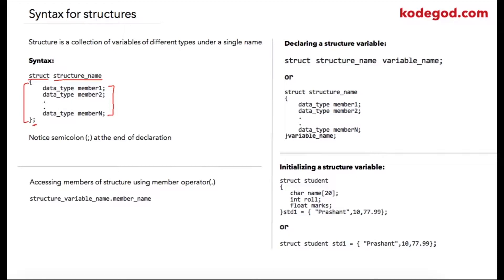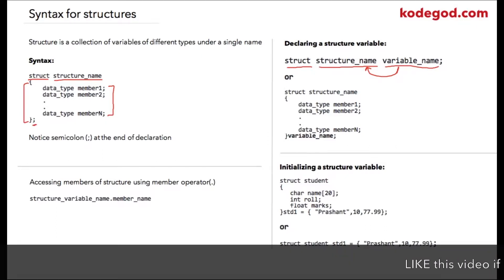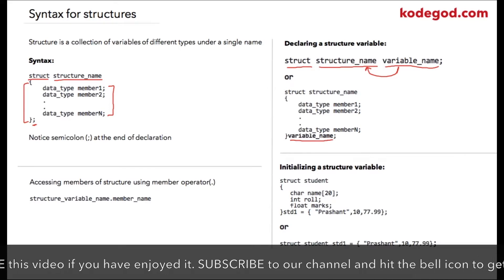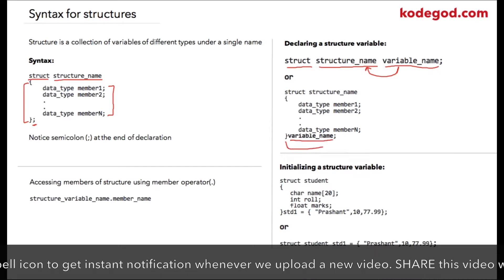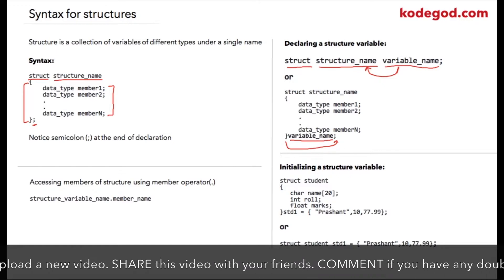To declare a structure variable, we again use the keyword struct, then the structure name, and after that you write your variable name — so the variable name is a variable of type structure name. There is one more method: you can immediately write your variable name after the structure definition, between the closing curly brace and the semicolon.